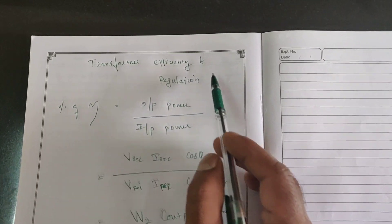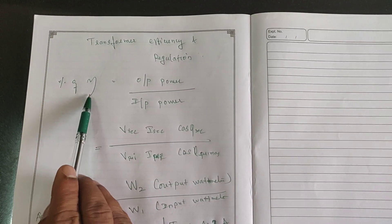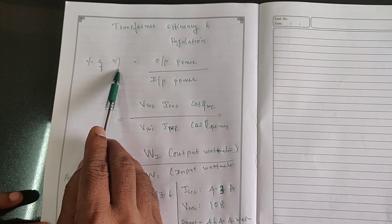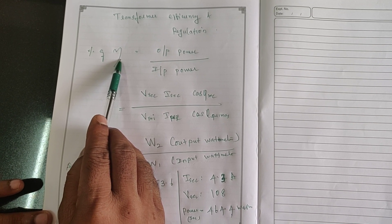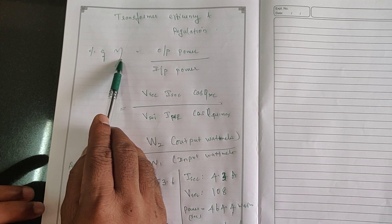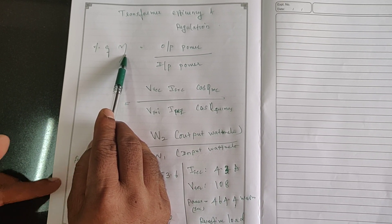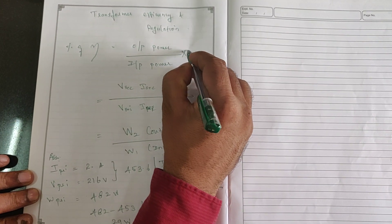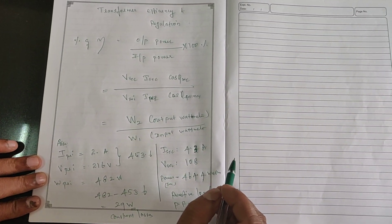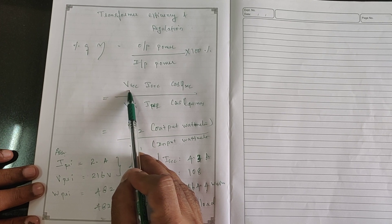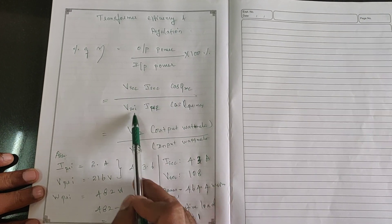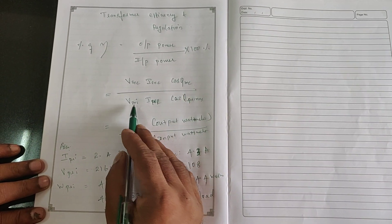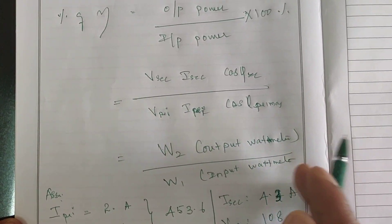The formula for efficiency is output power divided by input power. The percentage efficiency — when I say regulation, it means change in the load terminal when input is kept constant. The formula for finding efficiency is secondary voltage into secondary current into secondary power factor, divided by primary voltage into primary current into primary power factor. That is, P = V × I × cos θ on both the primary and secondary sides — output by input.